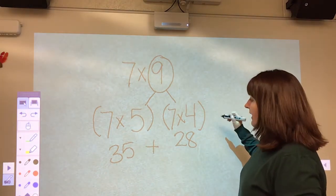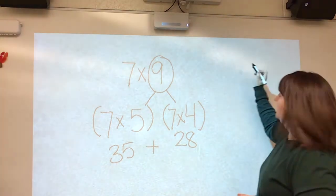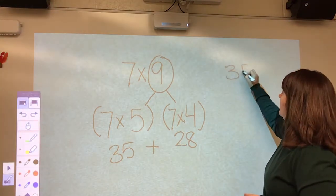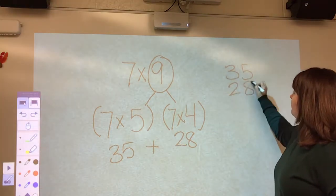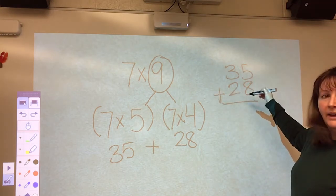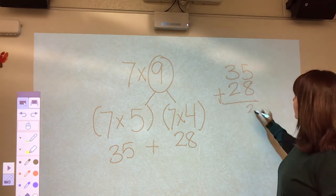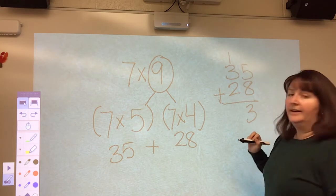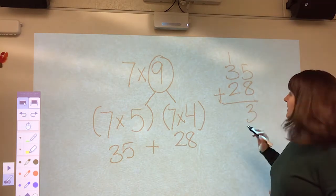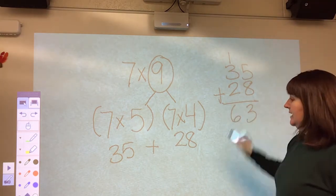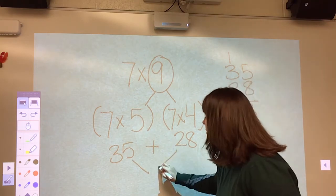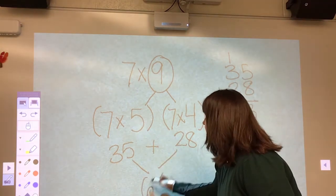So 35 plus 28. I'm just going to do my work over here to solve that. In the 1's, we have 5 plus 8. That's 13. And then in our 10's, we have 1 plus 3 plus 2. And that's 6. So that means our total is 63.